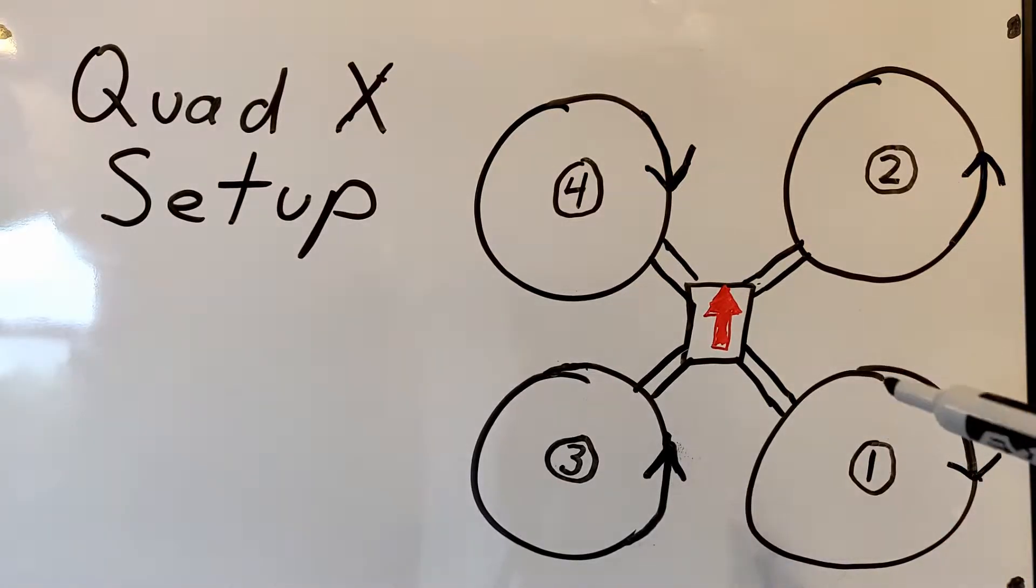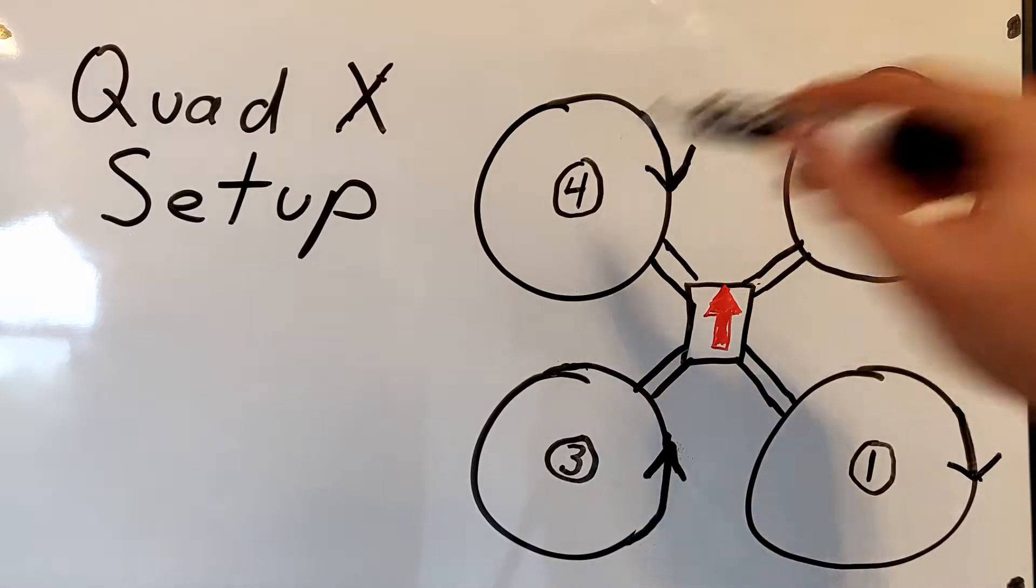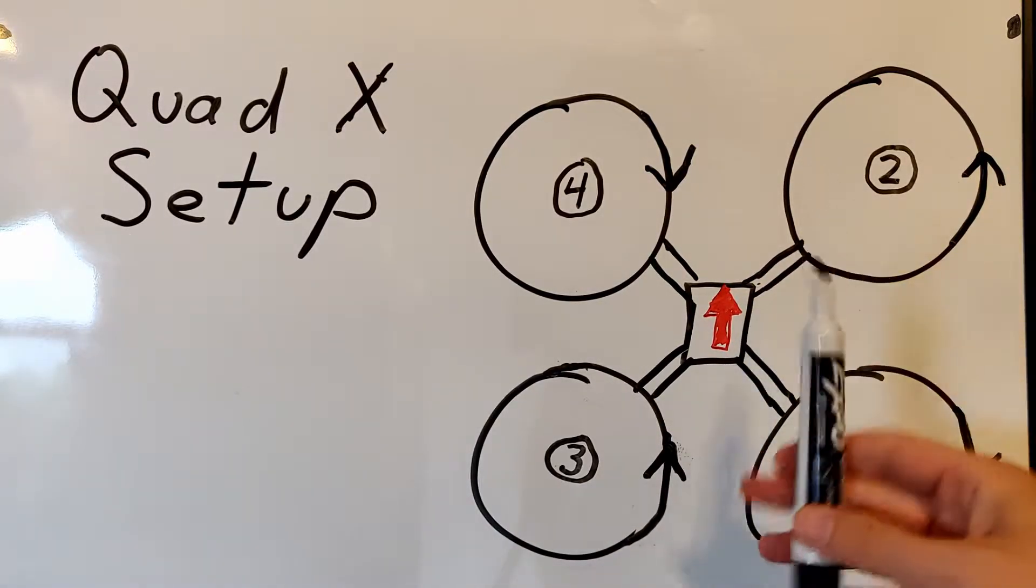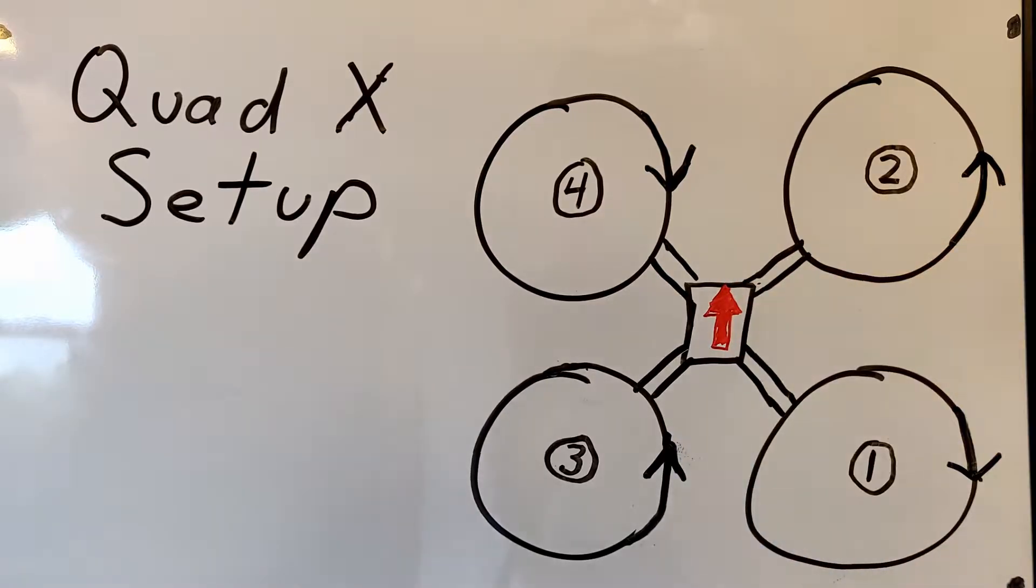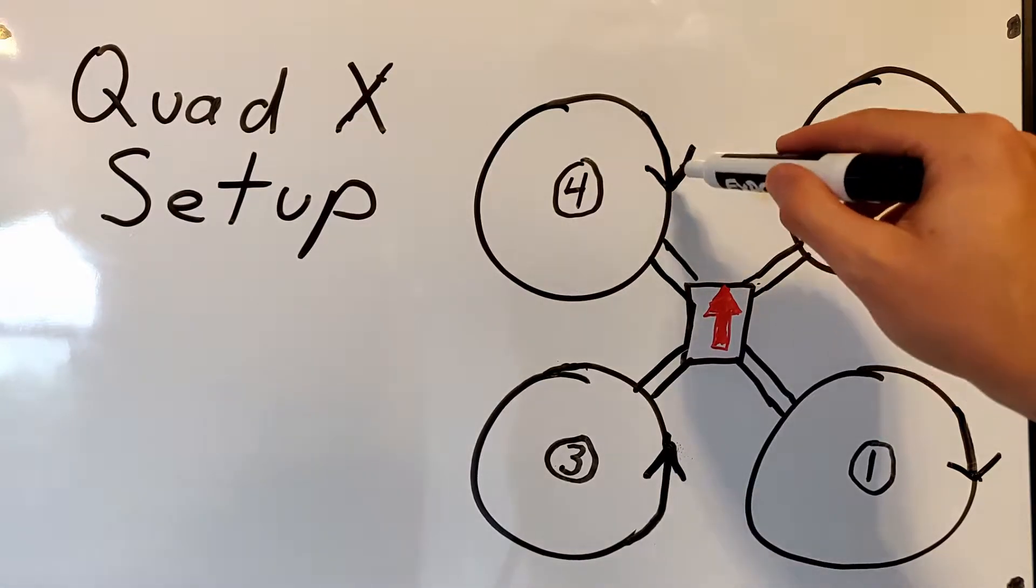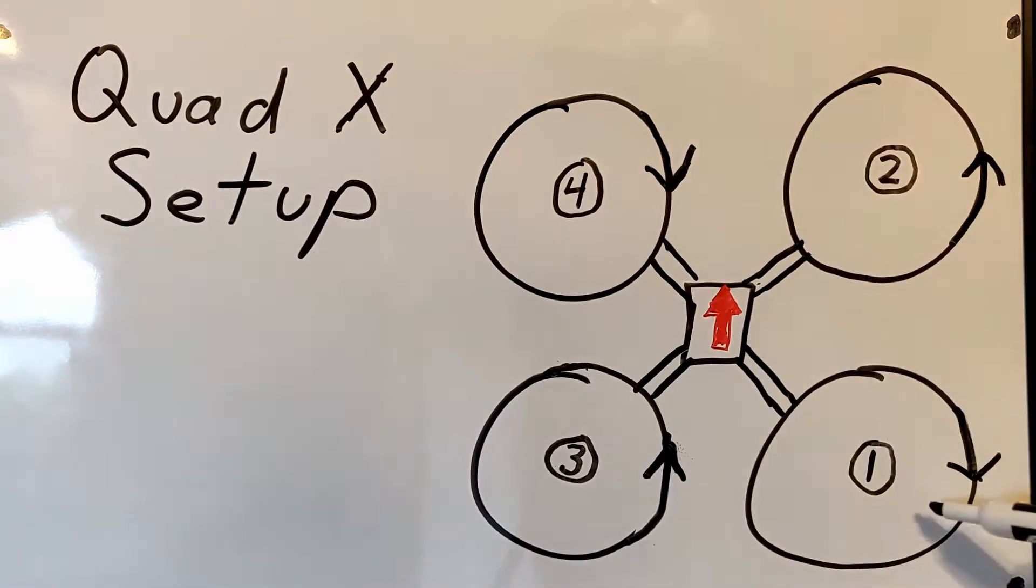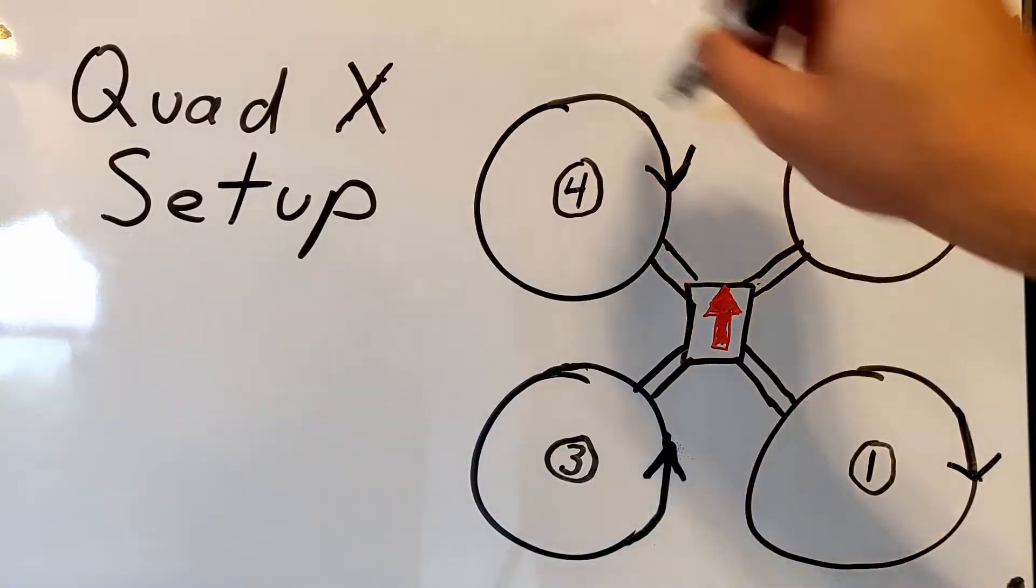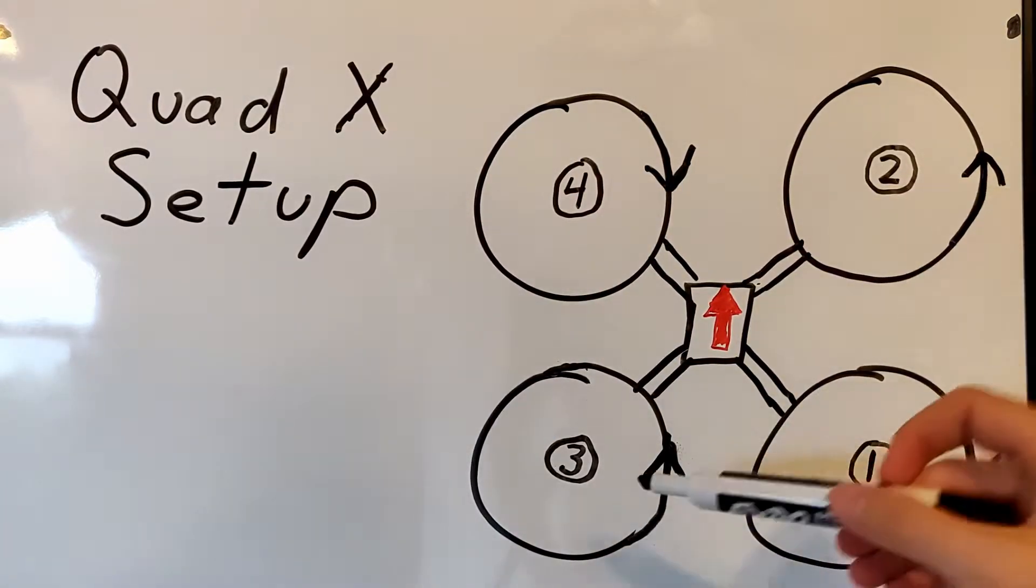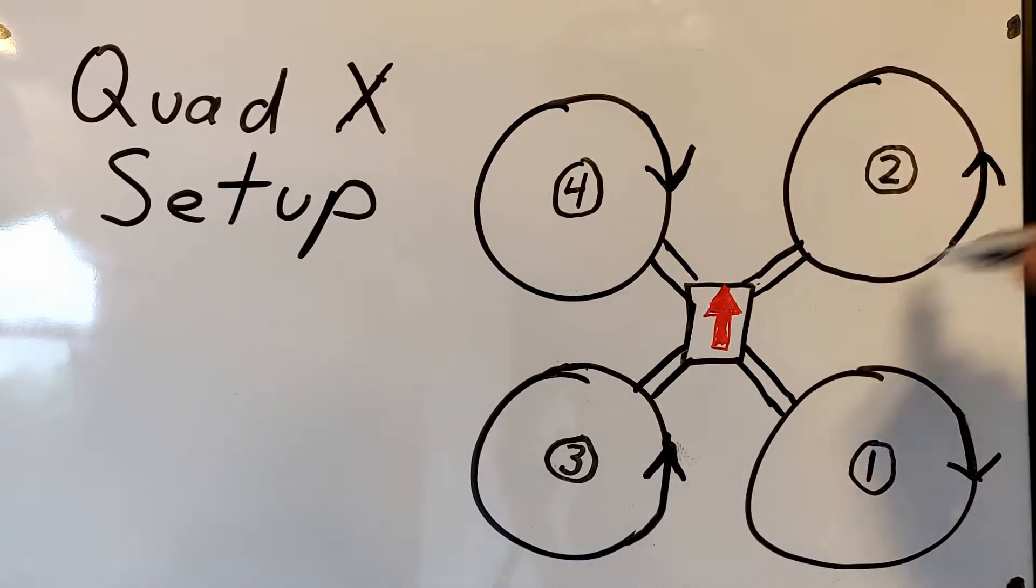So here are our four motors. You'll notice they're numbered one, two, three, and four. Also notice that the red arrow in the middle is facing towards the front of the quad. You'll also see the directions that the propellers are spinning. So motors number four and number one spin clockwise and motors number two and number three spin counterclockwise.